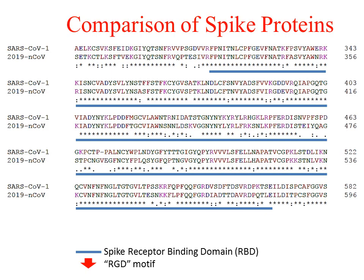I compared the protein sequence of the spike protein from previous SARS coronavirus 1 of year 2002 and the recent 2019 novel coronavirus. I found that the spike proteins of the novel coronavirus have an important motif called the RGD motif in their receptor binding domain, and this RGD motif is not present in previous SARS coronavirus 1.